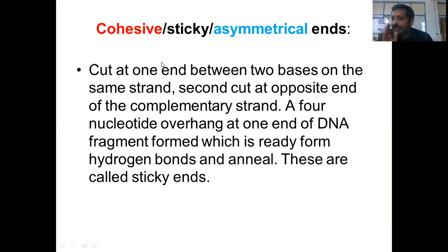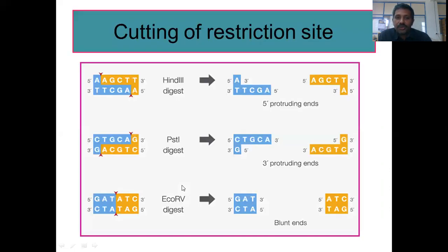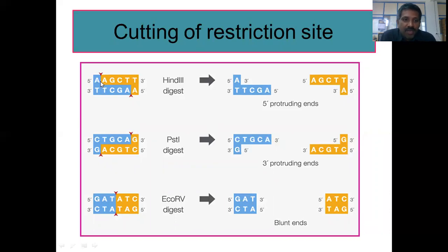Cohesive ends are defined as follows: the enzyme cuts at one end between two bases on the same strand, then makes a second cut at the opposite end of the complementary strand. A four-nucleotide overhang at one end of the DNA fragment is formed, which is ready to form hydrogen bonds — these are called sticky ends. The restriction enzyme cuts at the five prime end.